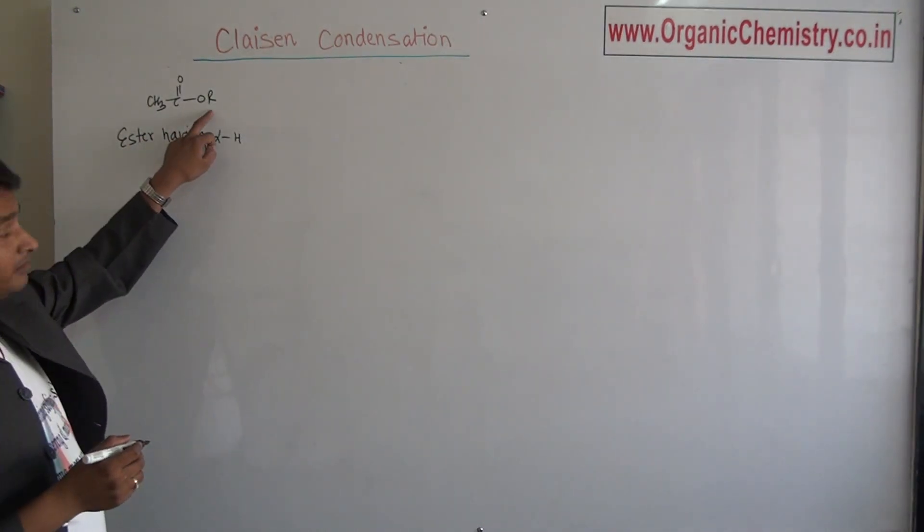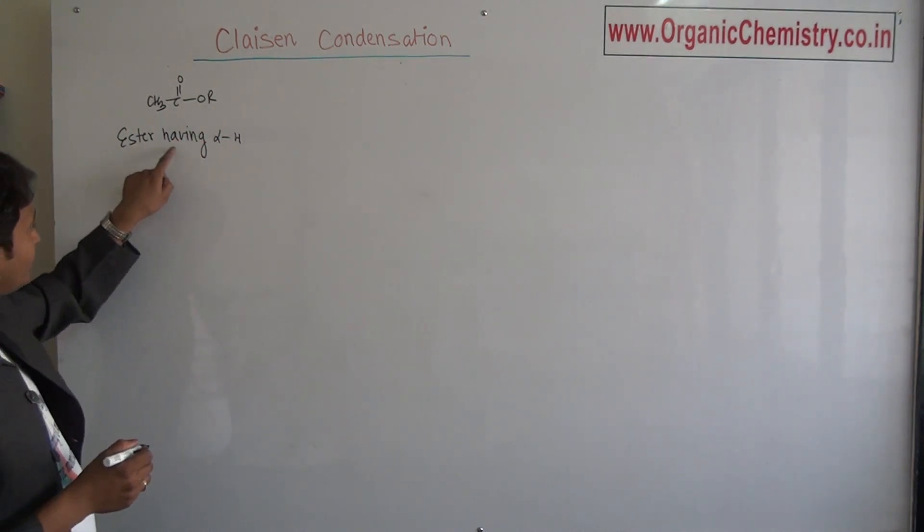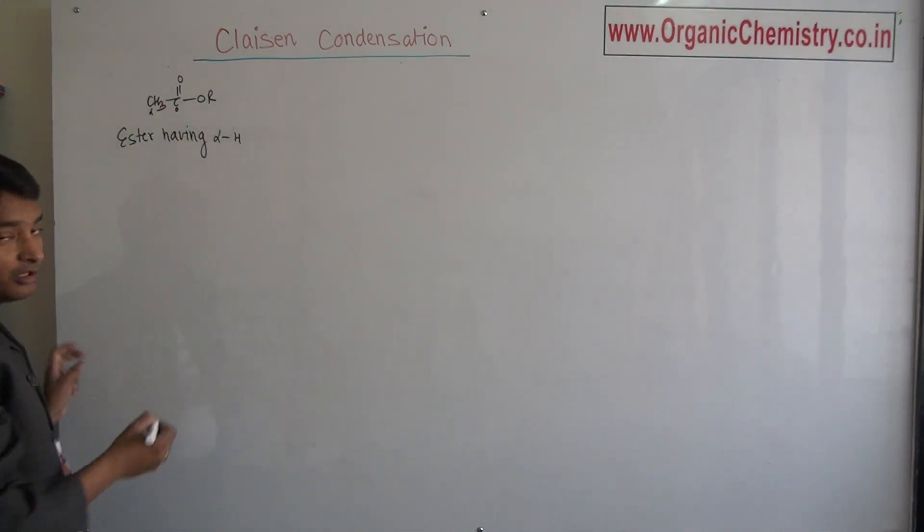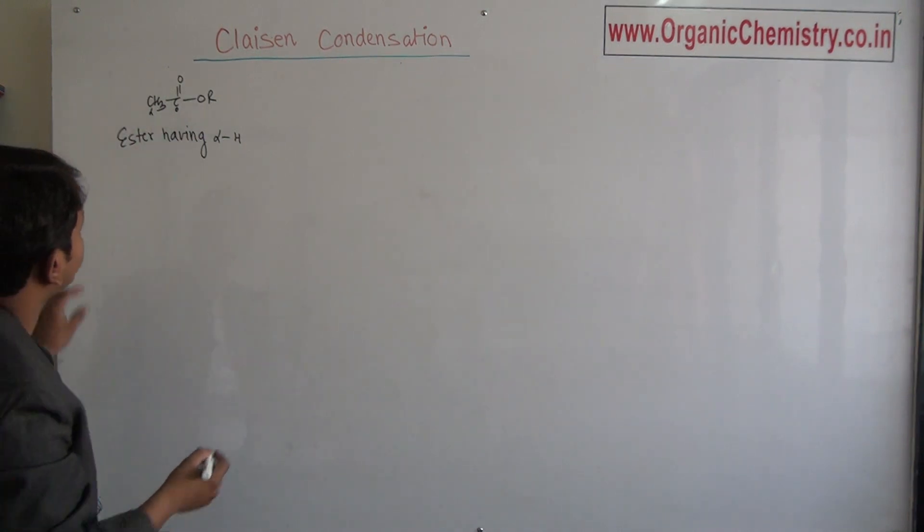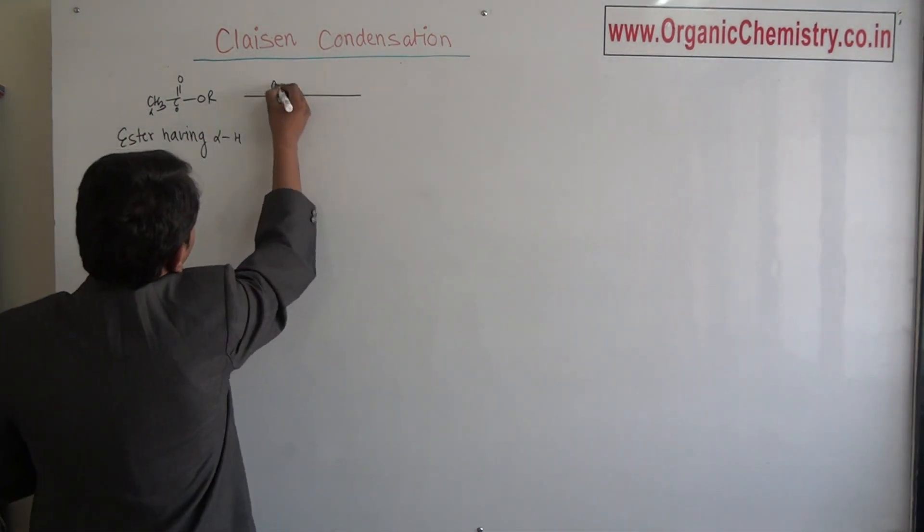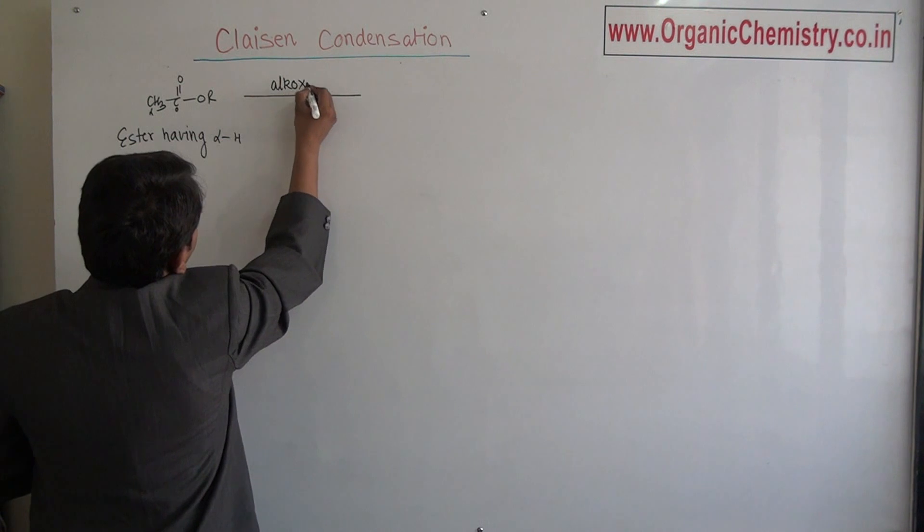This R may be anything, but the important part is ester having alpha hydrogen. This is zero (carbonyl carbon). This is alpha (carbon). So ester having alpha hydrogen on treatment with alkoxide...